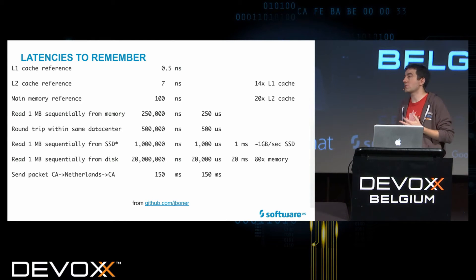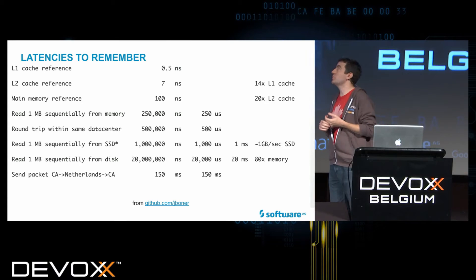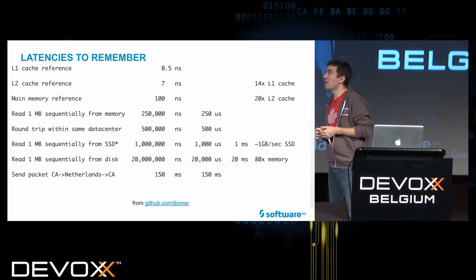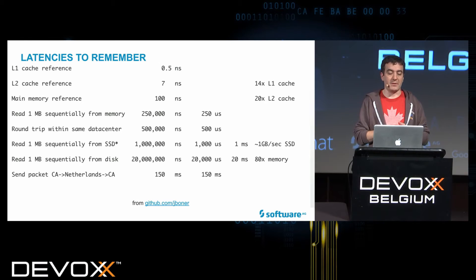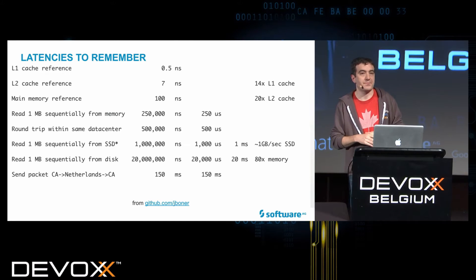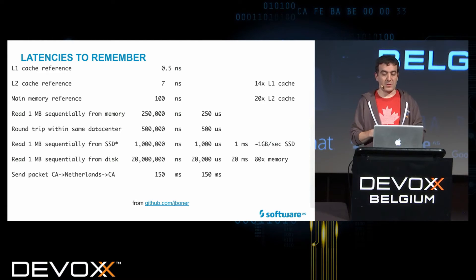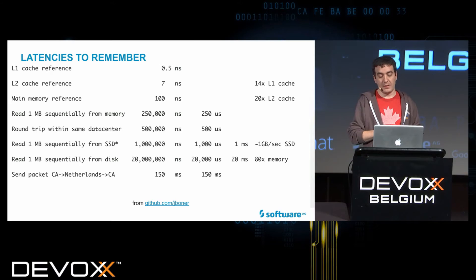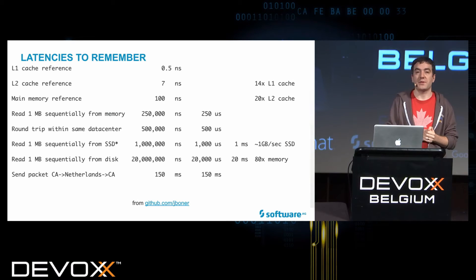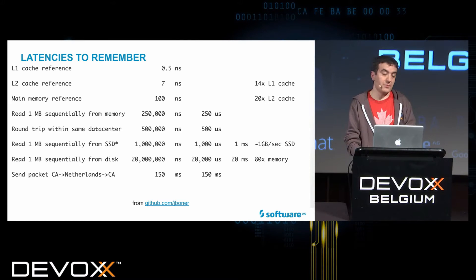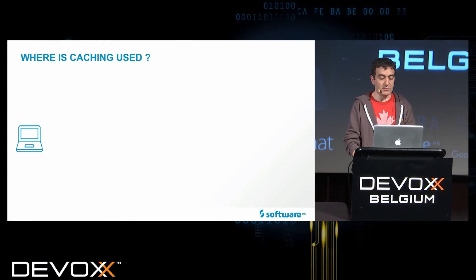Let me remind you of some latency numbers. An L1 cache reference is half a nanosecond. L2 cache reference is 7 nanoseconds — already 14 times slower than L1. Main memory reference is 20 times slower than L2. Reading one megabyte from memory is 1,000 times slower. And with disks and networks, it gets even worse. So you want your data to be close to your CPU.